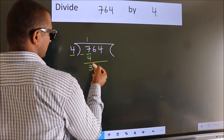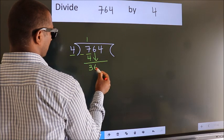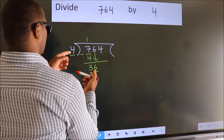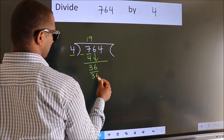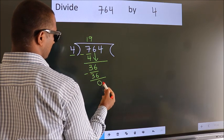After this, bring down the beside number. So 6 down. So 36. When do we get 36? In 4 table. 4 nines 36. Now we subtract. We get 0.